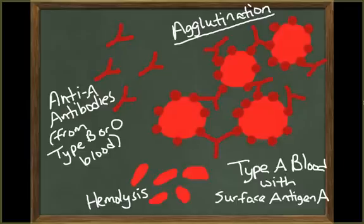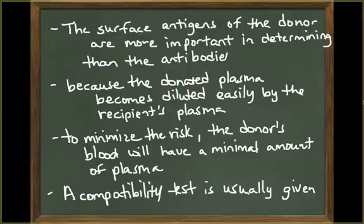These cross-reactions or transfusion reactions can be prevented by ensuring that the blood types of the donor and the recipient are compatible. The surface antigens on the donor's cells are more important in determining compatibility than the antibodies in the donor's plasma. This is because the donated plasma is diluted quickly through mixing with the large plasma volume of the recipient. Also, to minimize the risk of a cross-reaction, packed red blood cells with minimal plasma volume will be transfused. A compatibility test is usually performed prior to any transfusion.